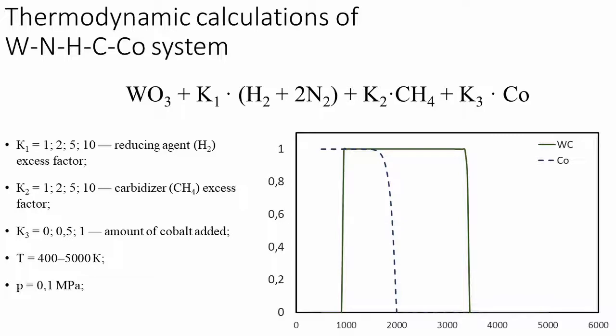Thermodynamic calculations of the equilibrium compositions of the shown system have been performed to evaluate the influence of the concentration of precursors and the temperature of the process on the chemical and phase composition of the resulting tungsten carbon cobalt composition. It follows from the equilibrium compositions calculations that monocarbide with 100% yield can be obtained in the considered system.